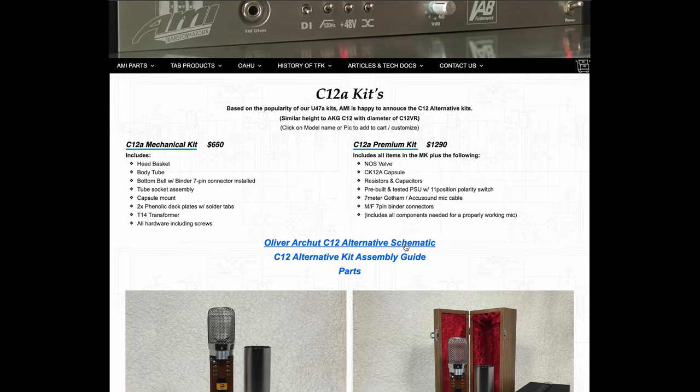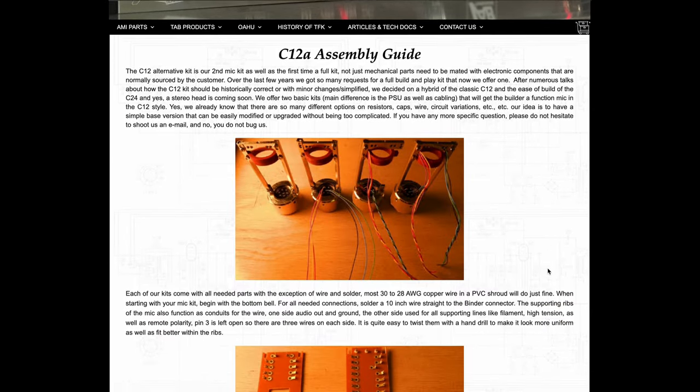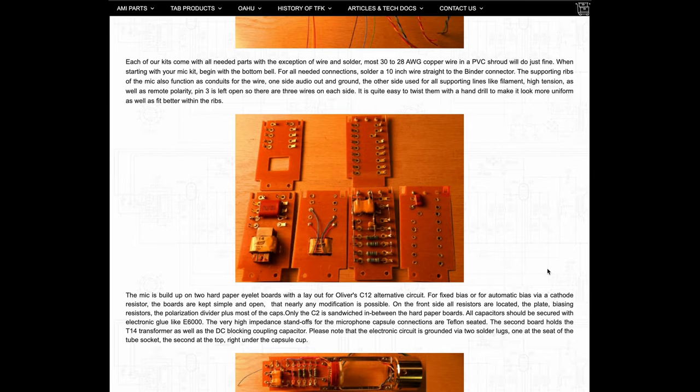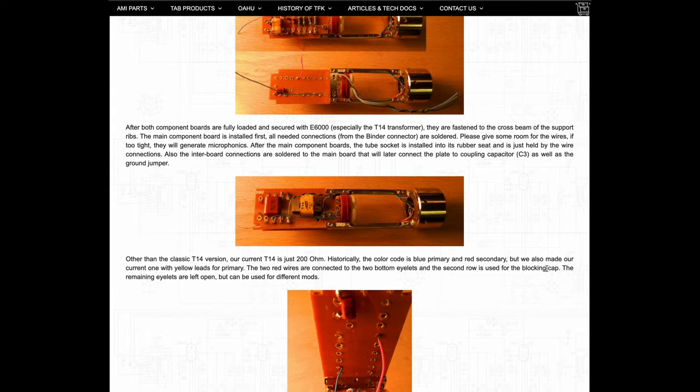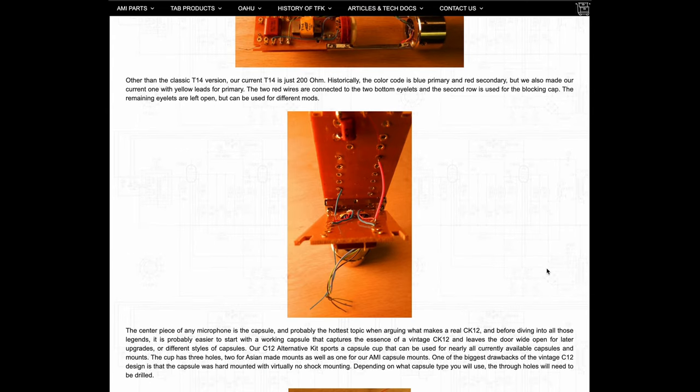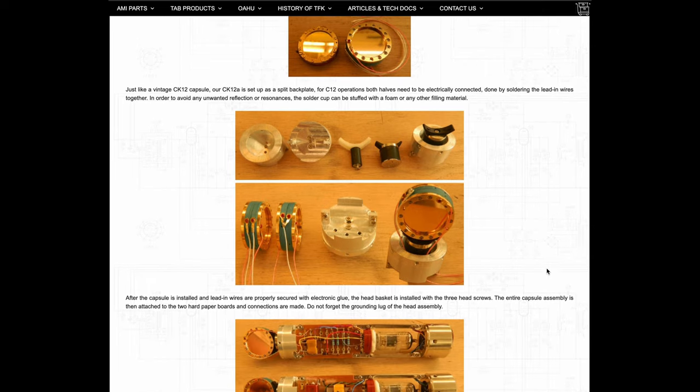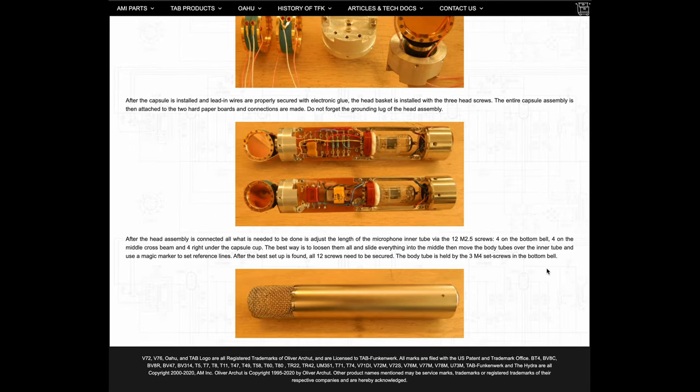When you buy the premium kit, they come with a power supply and a NOS tube, and that seemed like a good choice for these builds. There is an assembly guide, which has some really nice detailed pictures and text on the order that you should build the microphone and some helpful hints along the way. What I found most helpful was probably the layout diagram and the included schematic diagram.